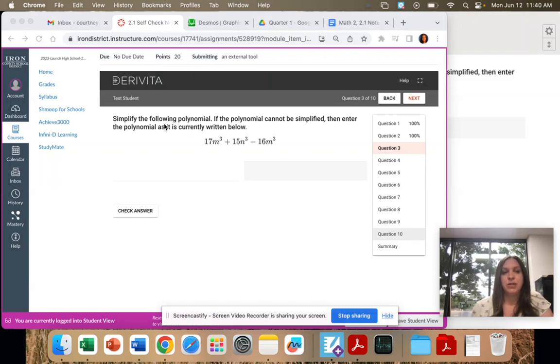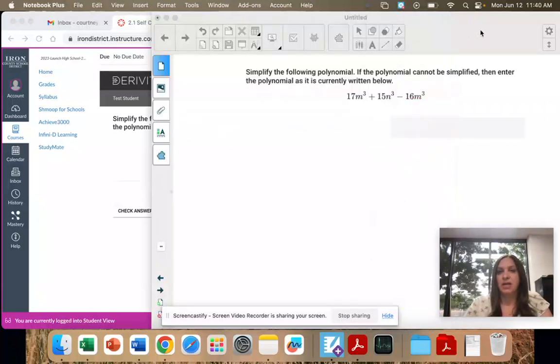So we're doing the same thing. We're simplifying the polynomial. If it cannot be simplified, we'll write it as is.